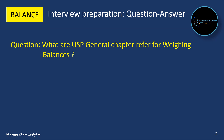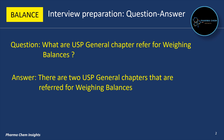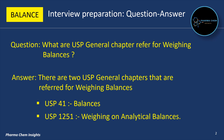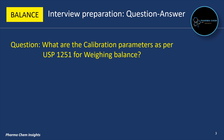First question: what are the USP general chapters referred for weighing balances? There are two USP general chapters that are referred for weighing balances. First is USP 41 Balances, and second is USP 1251 Weighing on Analytical Balances.